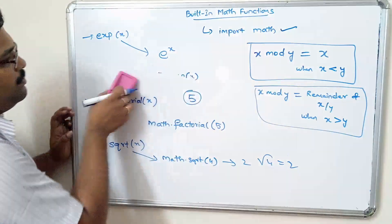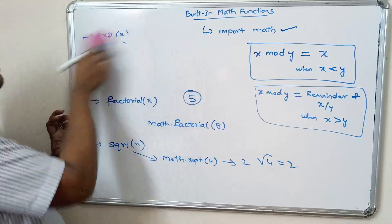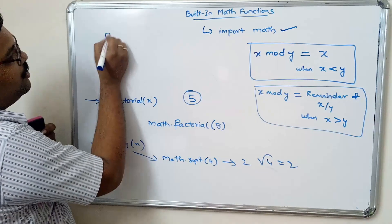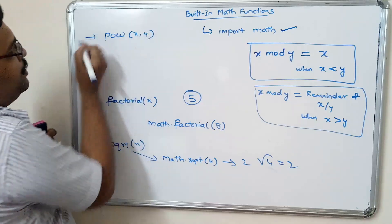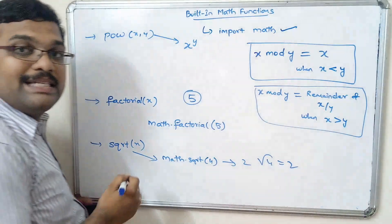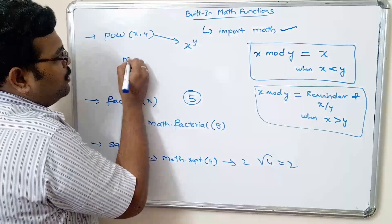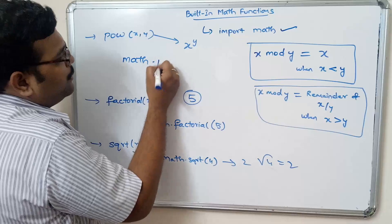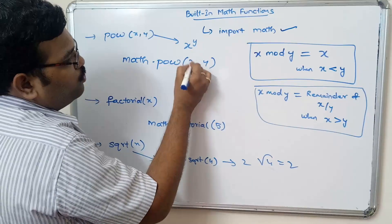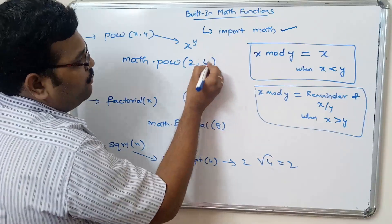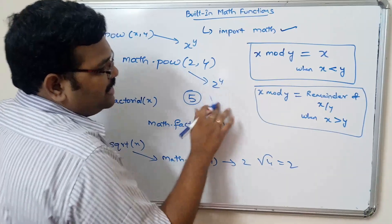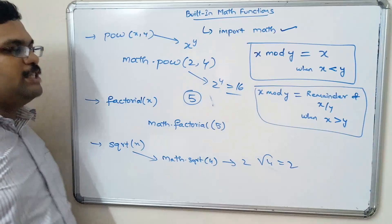Next is the power function — pow(x, y). It will return x raised to the power y. We write math.pow(x, y). For example, math.pow(2, 4) will return 16. These are the few built-in mathematical functions available in Python programming.